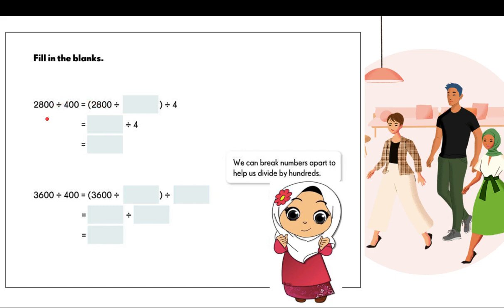Moving on — one last example to ensure you know how to do this. 2,800 divided by 400: it is the same as 4 hundreds, so divide 2,800 by 100 first, then divide again by 4. Getting the quotient gives us 28 divided by 4, and the final answer is 7. Lastly, 3,600 divided by 400 can be broken down by dividing by 100 and then by 4. So 36 divided by 4 gives an answer of 9.